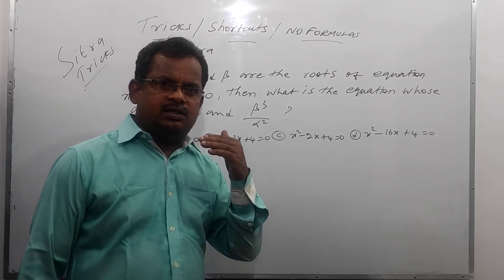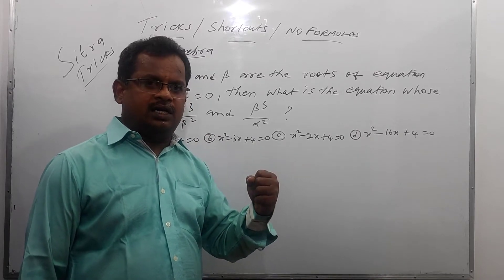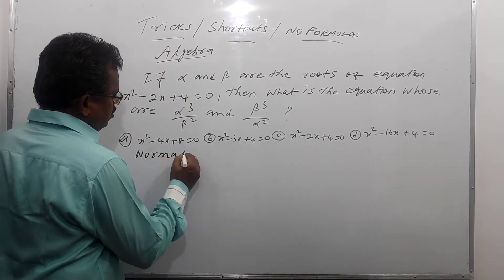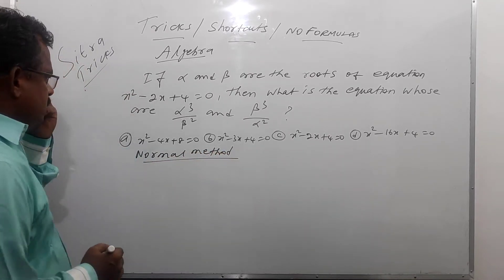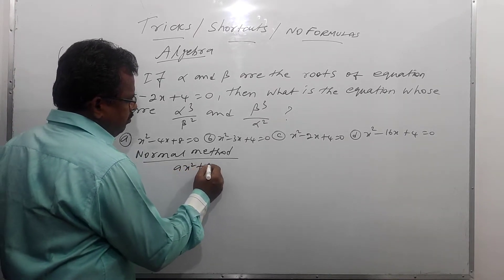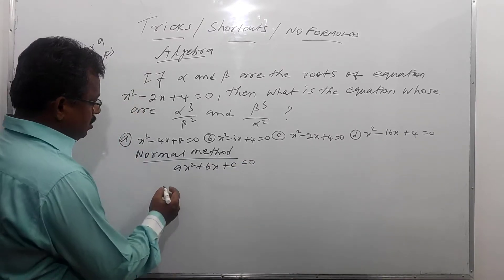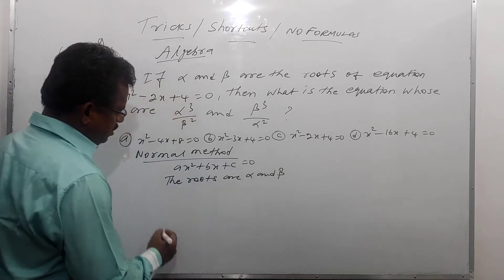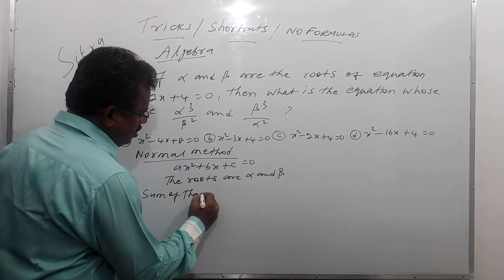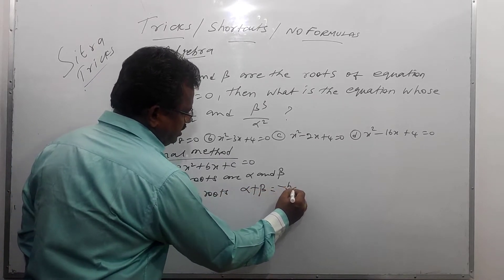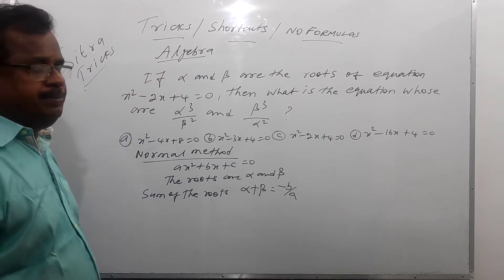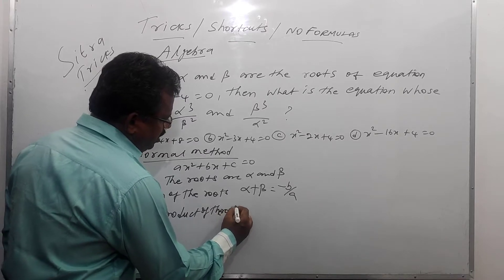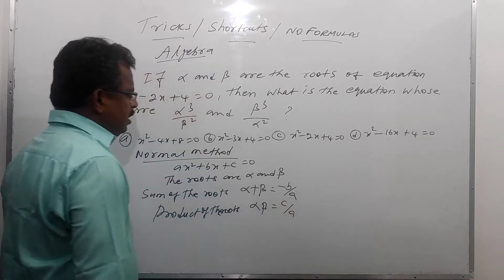First, I am going to teach the normal method, then I am going to teach the shortcut without formula tricks. For a quadratic equation ax squared plus bx plus c equal to 0, with roots alpha and beta: sum of the roots, alpha plus beta equals minus b by a; product of the roots, alpha beta equals c by a. This is the formula.